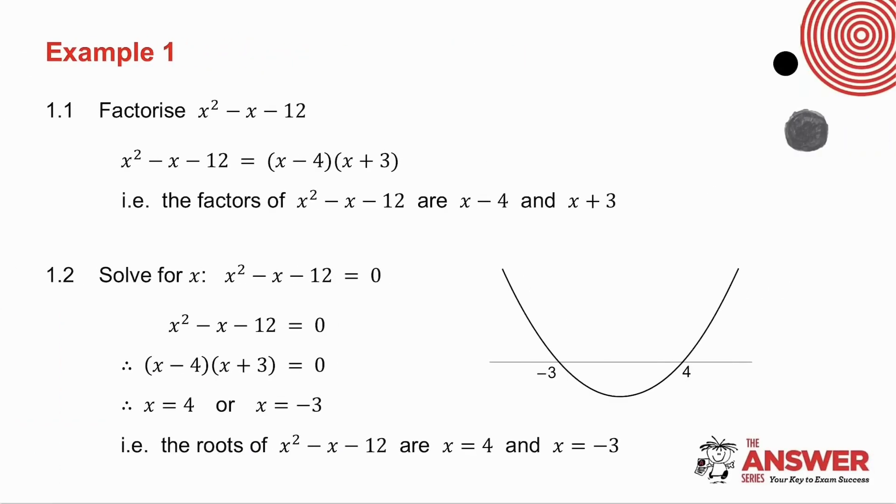In example number one, 1.1 says factorize x squared minus x minus 12. That's very straightforward, it's just x minus 4, x plus 3. So the factors of x squared minus x minus 12 are x minus 4 and x plus 3.